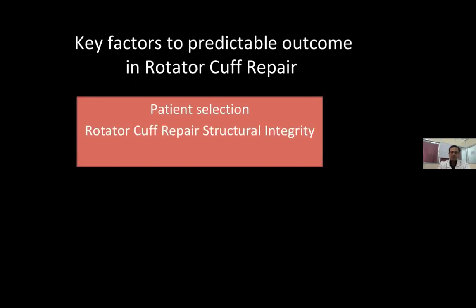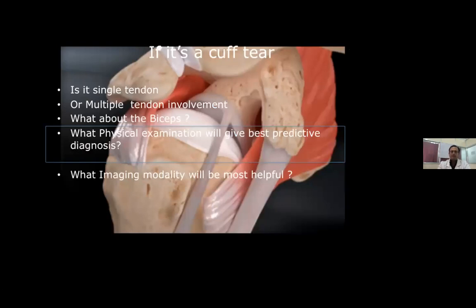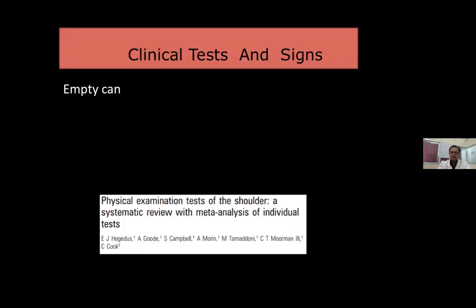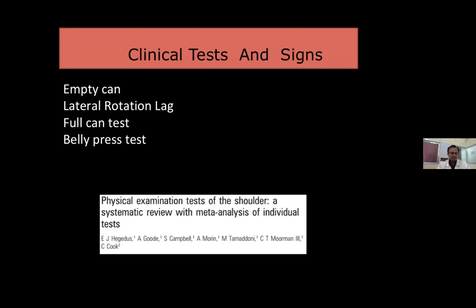The key factors in predictable outcome of rotator cuff repair are: patient selection, structural integrity of repair, and post-operative rehabilitation. These three factors give you a reproducible rotator cuff repair and a happy patient. The clinical tests with the best predictive value include the empty can test, lateral rotation lag test, full can test, belly press test, lift-off test, and Neer's test. These delineate which particular tendon is involved.